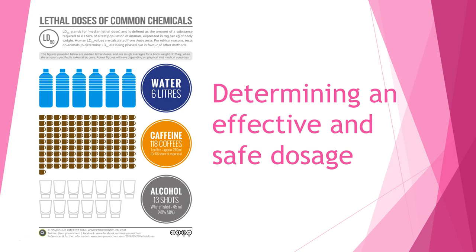What you're looking at here is 118 coffees in a short period of time — estimated all at once for someone around 75 kilograms, which is pretty much impossible. 13 shots of alcohol is the lethal dose there; however, alcohol poisoning does occur with drinking too much in a short period. We're probably not drinking six liters of water at one time, but the point is that anything can have a lethal dose if we ingest too much of it.